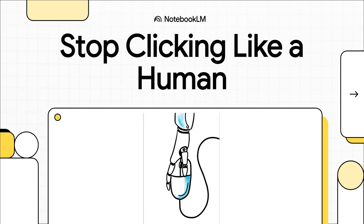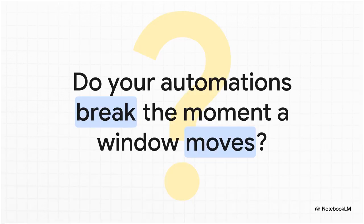If you've ever gotten into AutoHotKey, you almost certainly started by recording mouse clicks and sending keystrokes. It makes sense — it's intuitive. But if you want to build automations that are actually reliable, the kind you can trust and even share, you have to stop clicking like a human, because there is a much, much smarter way to do things.